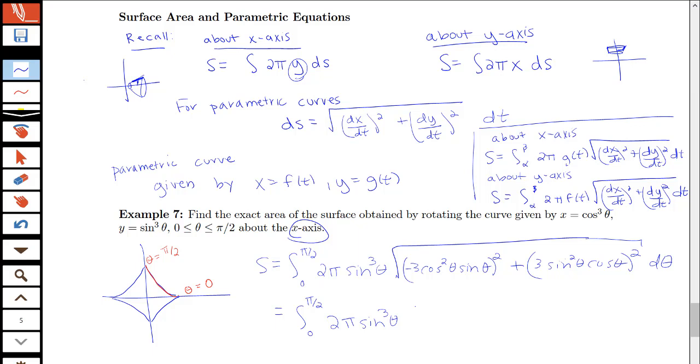we saw that we could factor out a 9 cosine squared sine squared, and then we had that times the sine squared plus cosine squared, so the sine squared plus cosine squared became 1, and then this square root part here simplified to 3 cosine θ sine θ. So we'll say that that work is from what we did in example 6 in the previous video.